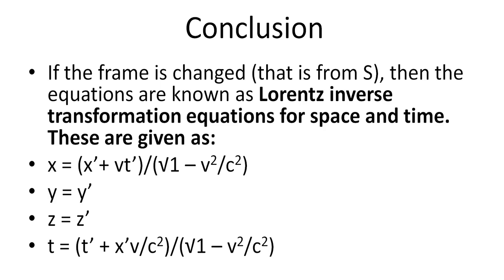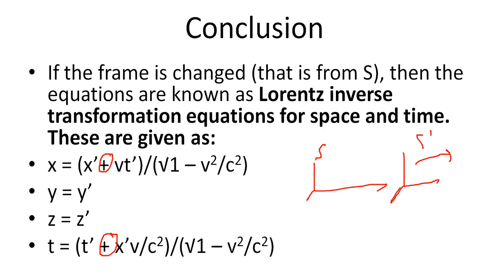If the frame is changed from S, the equations are known as the Lorentz inverse transformation equations for space and time. These are: x equals (x' plus vt') divided by the square root of (1 minus v²/c²); y equals y'; z equals z'; and t equals (t' plus x'v/c²) divided by the square root of (1 minus v²/c²). Note the positive signs here, because we are now measuring from frame S the movement of S', which moves along the positive x-axis with uniform velocity positive v.